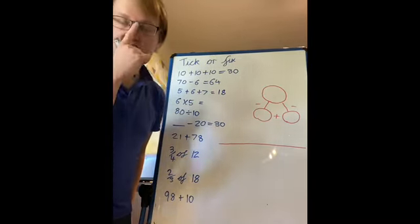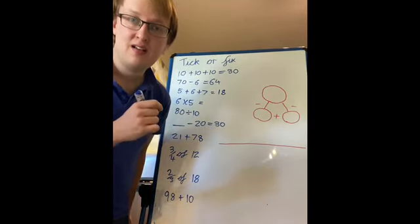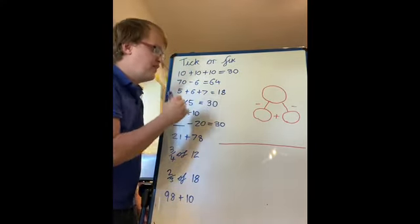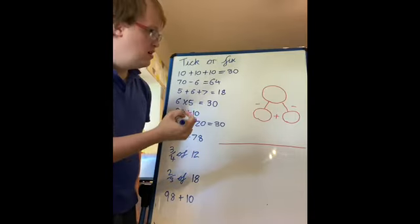Six fives, six fives are 30. Hopefully you know your five times table now. Six fives are 30, or five sixes are 30.